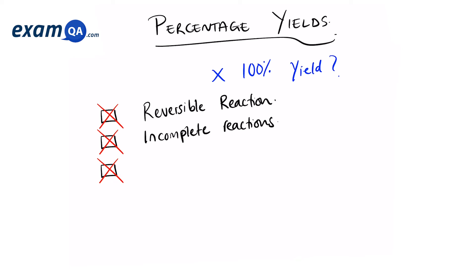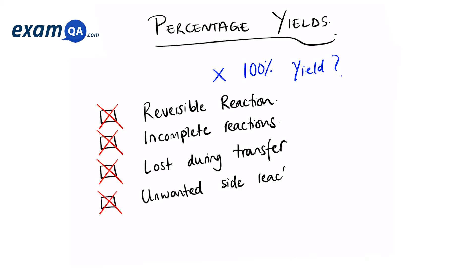Sometimes products can be lost, especially if you're transferring from one beaker to another one. Sometimes a chemical reaction produces side products which use up your reactants, and this reduces the amount of product that you can produce.